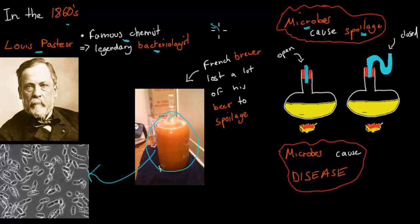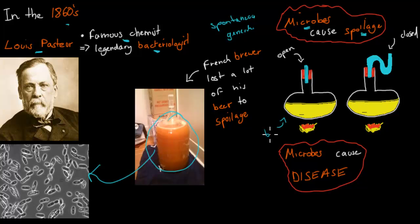He did an experiment to prove it because people were skeptical. People believed in spontaneous generation — that spoilage would just appear, nothing would be causing it, it would just appear. He set up two conical flasks with broth, which is just food for bacteria. One was open with just an open glass section, whereas the other had an S-shaped stopper that was more or less closed — so bacteria trying to get in would get stuck and not be able to enter.